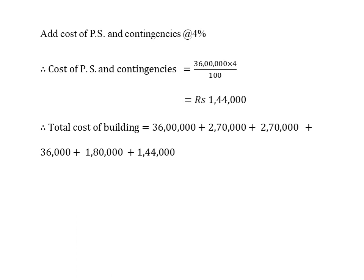To calculate the total cost of building, we add: building cost plus water supply plus electrical installation plus architectural features plus roads and lawns plus PS and contingencies. Total cost of building is equal to 36 lakhs plus 2,70,000 plus 2,70,000 plus 36,000 plus 1,80,000 plus 1,44,000. The total cost of building project is equal to rupees 45 lakhs.